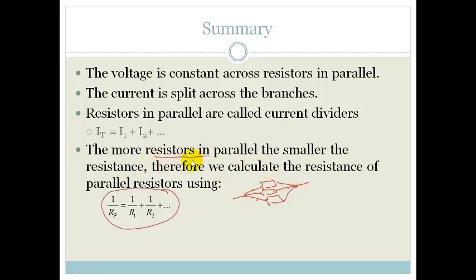the more resistors in parallel, the smaller the resistance. The equation, therefore, that we use is 1 over Rp, which equals 1 over R1 plus 1 over R2, etc.